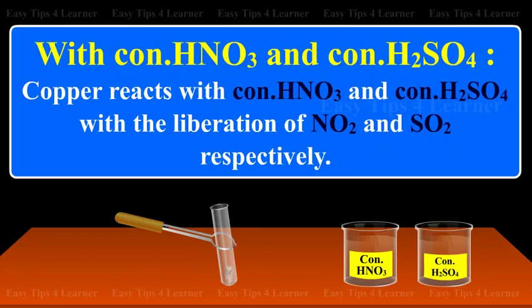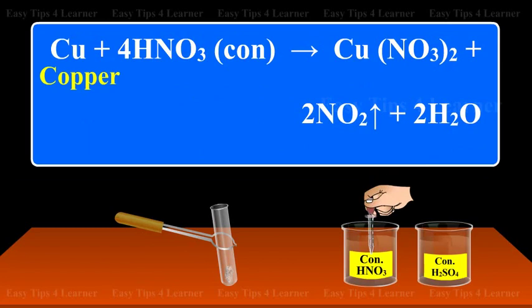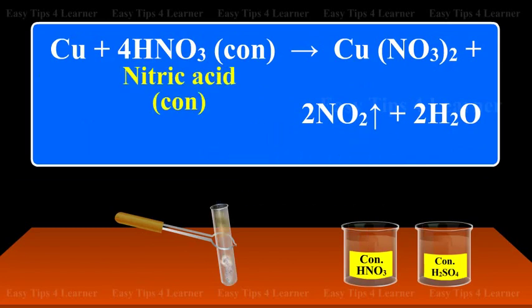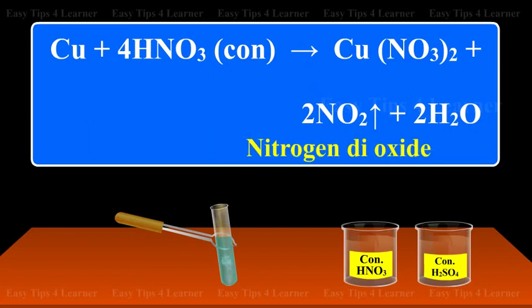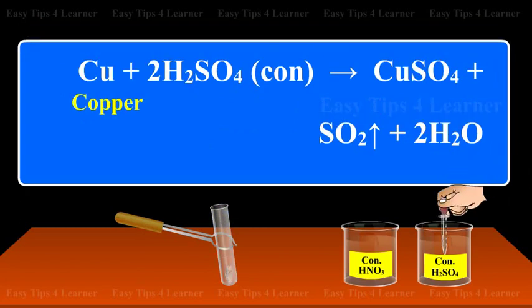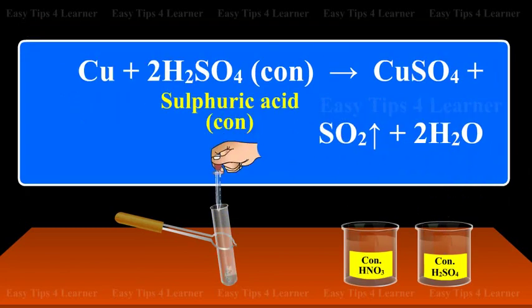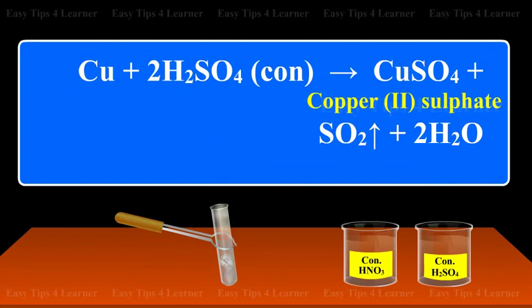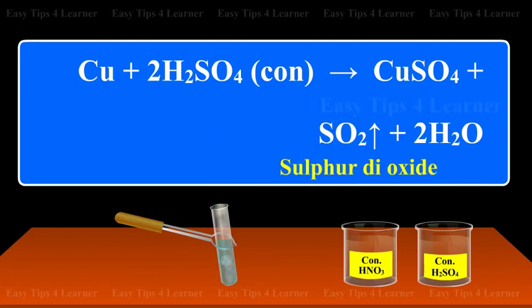Concentrated nitric acid and concentrated sulfuric acid: Copper reacts with concentrated nitric acid and concentrated sulfuric acid with the liberation of nitrogen dioxide and sulfur dioxide respectively. Copper + concentrated nitric acid gives copper nitrate + nitrogen dioxide + water. Copper + concentrated sulfuric acid gives copper sulfate + sulfur dioxide + water.